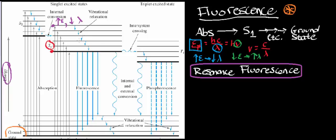Consequently, the highest energy state corresponds to the lowest wavelength. The energy where this red dot is corresponds to the lowest energy and the highest wavelength, and that's because of the equation: energy of the photon equals Planck's constant times the speed of light in a vacuum divided by the wavelength. So as I go from the red dot to the purple dot, energy increases and wavelength decreases; going down, energy decreases and wavelength increases.